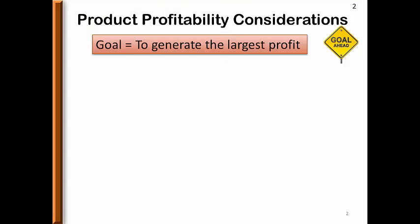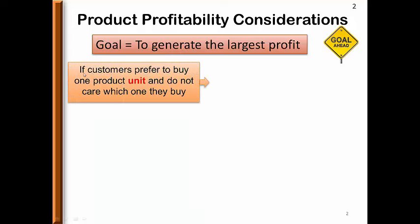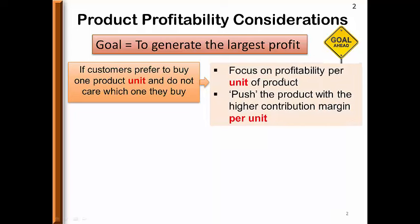Product profitability can be measured many different ways. The most efficient and accurate way is using contribution margin. Ultimately the goal is to generate the largest profit. If customers walk in and want to buy one unit and don't care which one, the company should focus on per unit profitability — in other words, push the product with the higher contribution margin per unit.